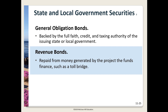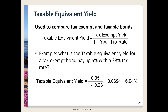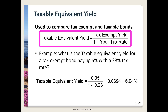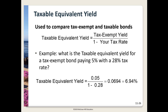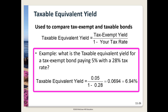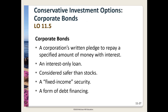When comparing a tax-free municipal bond to a taxable corporate bond, we have to find an equivalency. We convert the yield on a tax-exempt bond to an equivalent taxable yield for comparison. The conversion depends on the marginal tax rate of the investor. For example, a tax-exempt bond paying 5% for an investor in the 28% tax bracket: the tax equivalent yield equals the municipal yield divided by one minus the tax rate. Five percent tax-free is equivalent to 6.94% taxable.